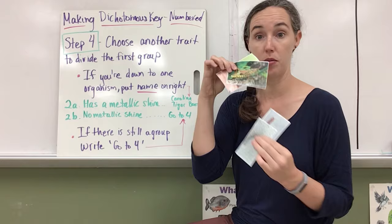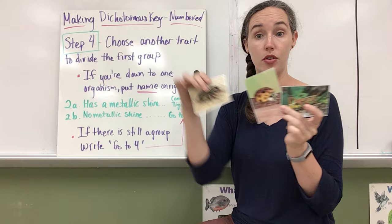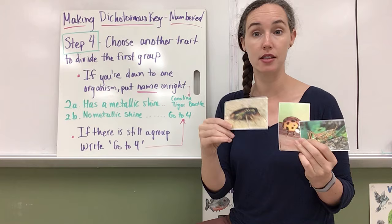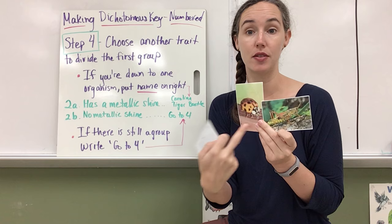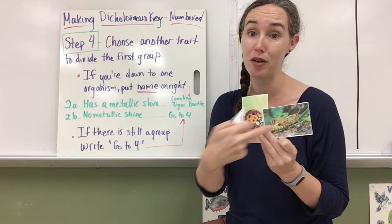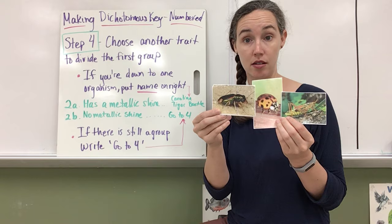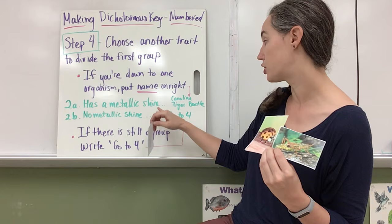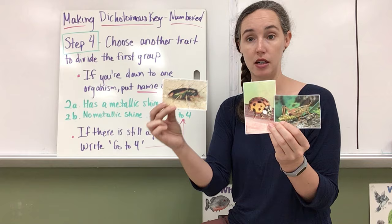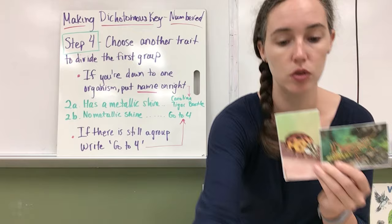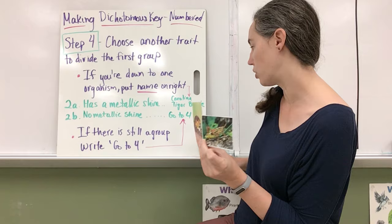Then I'm going to keep my insects, set those guys to the side. So now I have three that I need to differentiate between. So now I'm going to choose another trait to divide this group. So this Carolina tiger beetle is the only one that is metallic and shiny. These two actually have, even though they don't look alike, if you said something like black spots, they both have black spots. If you said orange has orange on it, they both have orange. They both have white and black. But this one has a bright shiny coating. So I'm going to use that. It has a metallic shine to pull it out. So if there's one that pulls it out, then you will write the name Carolina tiger beetle. And then fill in the other one, B, no metallic shine. So if there's still two, then you'll write go to whatever the next empty step is, which in our case is go to four.